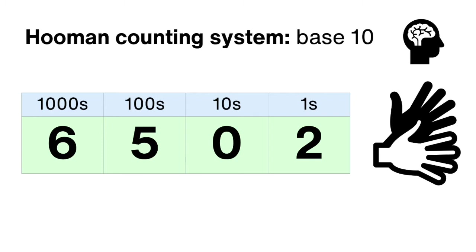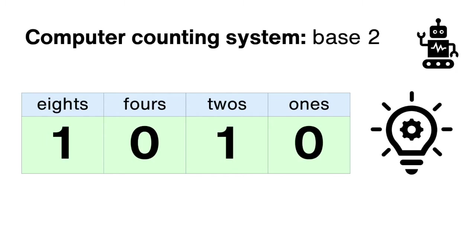We use 10 different symbols, 0 through to 9, to record numbers, and each column is worth 10 times more than the one to its right, so we have ones, tens, hundreds, and thousands. Computers, on the other hand, use the binary system, which just uses two symbols: 0 and 1.